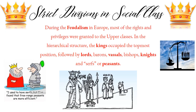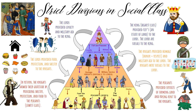During feudalism in Europe, most of the rights and privileges were granted to the upper classes. In the hierarchical structure, the kings occupied the topmost position, followed by the lords, barons, vassals, bishops, knights, and serfs, who were also known as peasants. One of the major characteristics of European feudalism was the strict division of social classes among the king, lords, knights, and peasants. The distinct social levels were responsible for the role of each individual, affecting the way people lived and their responsibilities. Now let's go into the details of each class in feudal society.